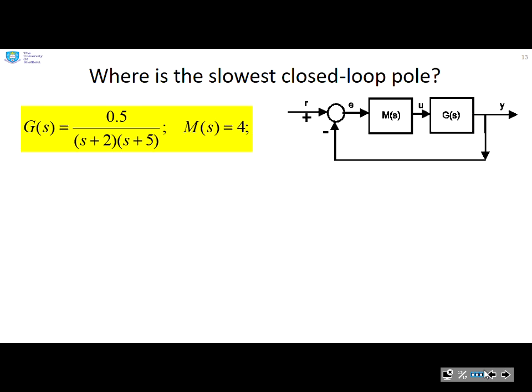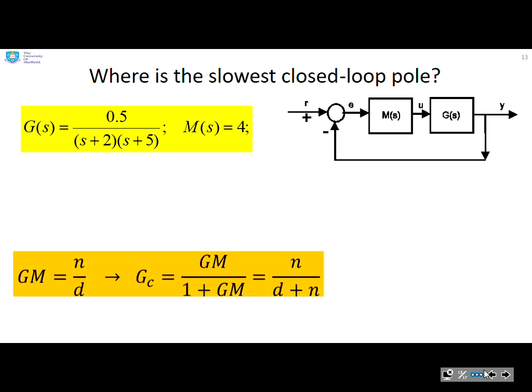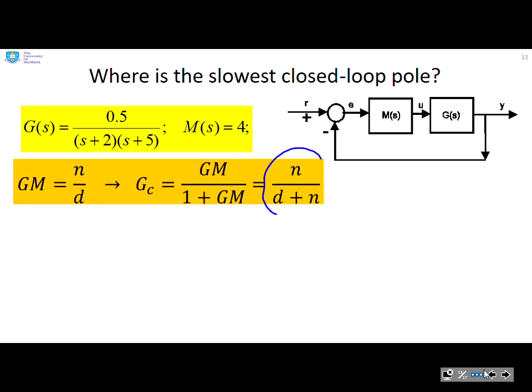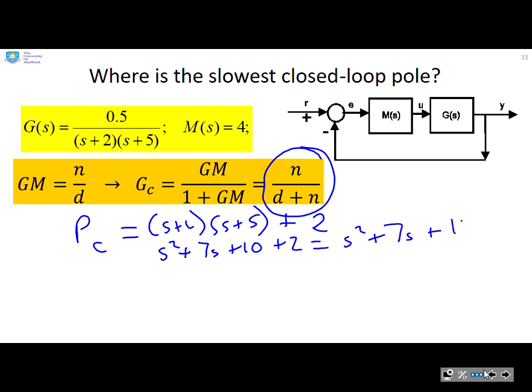So where is the slowest closed loop pole for this system here? And I'm going to exploit this expression. So the closed loop pole polynomial is just the sum of the denominator and the numerator. So I get s plus 2, s plus 5 plus 2. Now this is going to give you s squared plus 7s plus 10 plus 2, which is s squared plus 7s plus 12, which you can factorize by inspection as s plus 3, s plus 4.